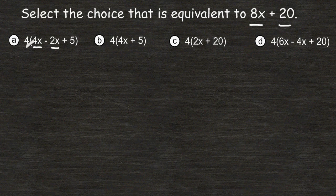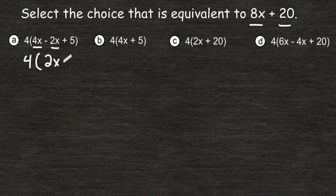I'm going to bring down this 4 on the outside of the parentheses, and on the inside, I'll take 4x and subtract 2x, which leaves me with 2x, and bring down the plus 5. We cannot combine that with 2x because they are not like terms.